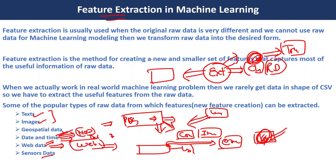Then, on top of feature extraction, we perform feature engineering steps like scaling and encoding, followed by feature selection — different techniques used on top of feature abstraction. That's it for today. I hope this video is helpful to all of you. Thank you very much for watching. Have a nice day.